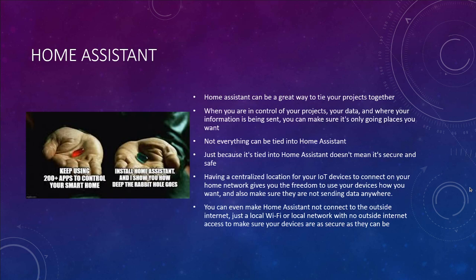Home Assistant can go on your server, on a Raspberry Pi, or if all of that sounds awful to you, you can actually just buy a pre-set-up Home Assistant that you can plug in and start working with. Home Assistant is awesome for tying all of your IoT projects together. If you wanted to have more control, see all your projects and pieces, or even communicate with IoT devices you bought from companies, you can do that. You can actually even make Home Assistant not connect to the outside — you can do it with just local Wi-Fi. It gives you a really great centralized way to talk to and work with all of your IoT devices.